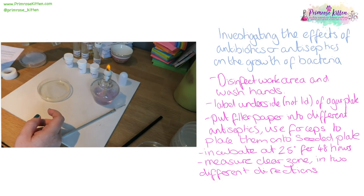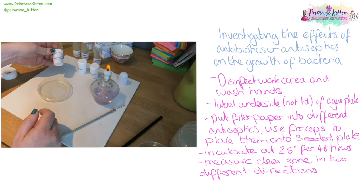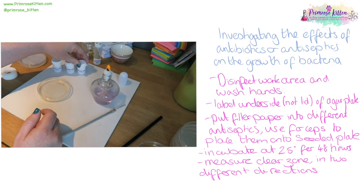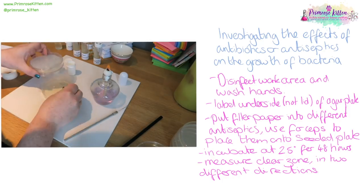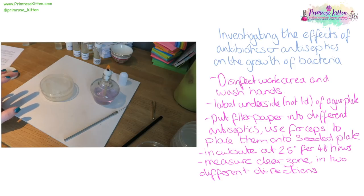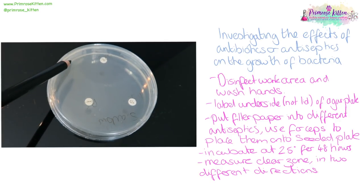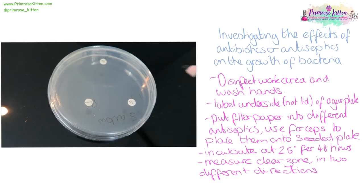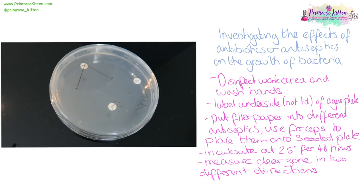When we are looking at the effect of antibiotics or antiseptics on how bacteria grow, we need to make sure that our work area and our hands are clean. Even though these bacteria are relatively safe to use, we have to assume they're going to be pathogenic. You need to make sure you've labelled the underside — not the lid — of the agar plate. The plates will probably already be seeded for you by the technician. You can put your little filter paper discs on there using forceps, then incubate them at 25 degrees for 48 hours. We can then measure the clear zones in two different directions — it's better to measure the diameter, but in some cases you may need to measure the radius if the clear zone is very large.